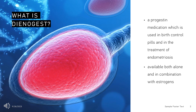Dienogest, sold under the brand name Visanne among others, is a progestin medication which is used in birth control pills and in the treatment of endometriosis. It is also used in menopausal hormone therapy and to treat heavy periods. Dienogest is available both alone and in combination with estrogens.